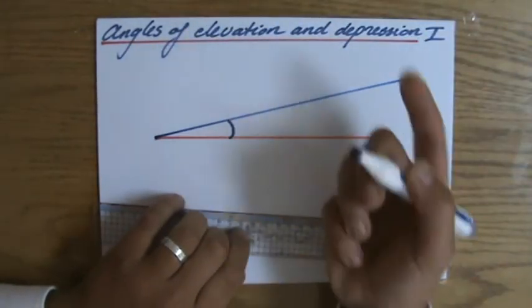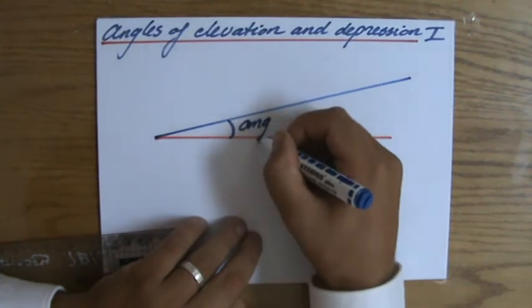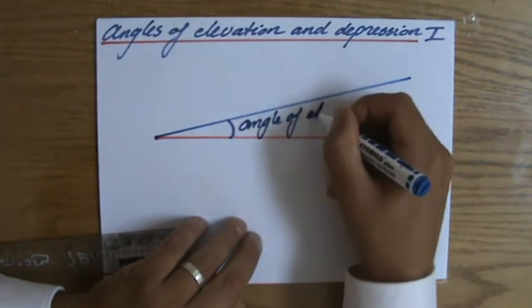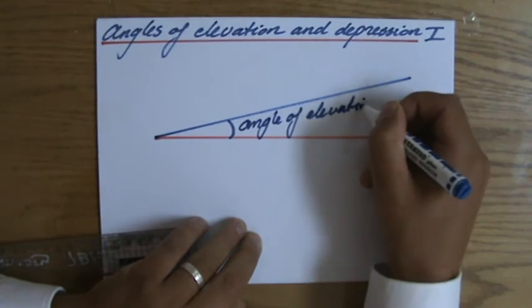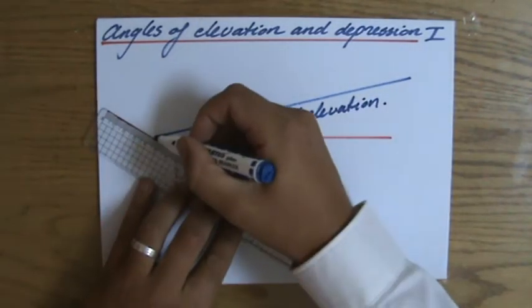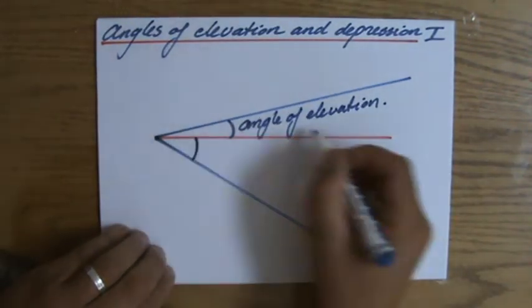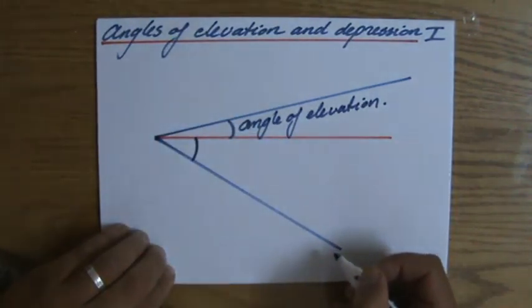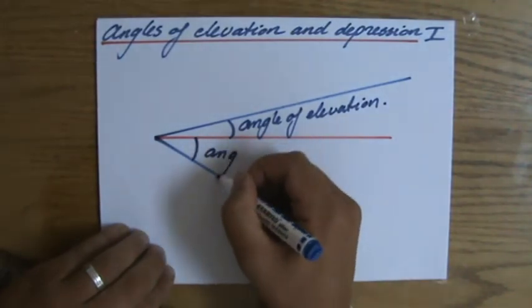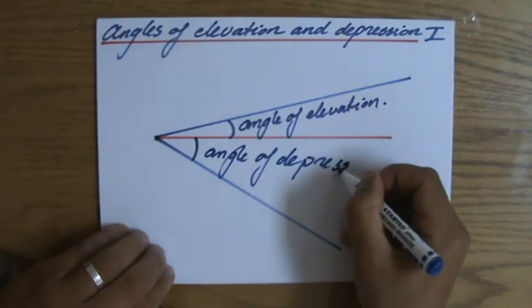So this is the angle above the horizontal. Do you agree with that? That would be my angle of elevation - the angle above the horizontal. And the angle below the horizontal, going down, between the horizontal and that line going down, is the angle of depression.